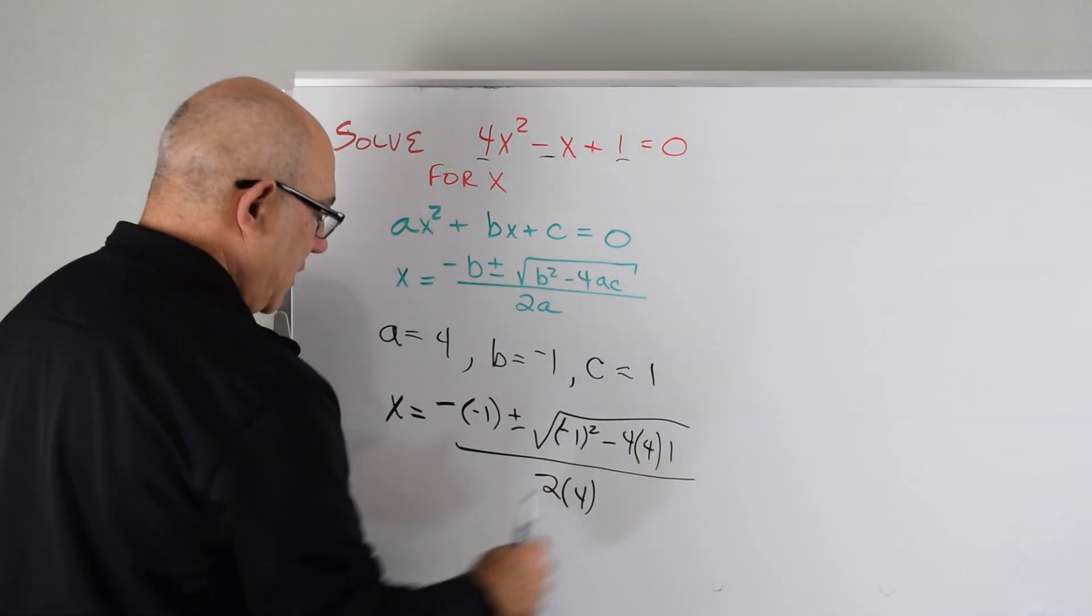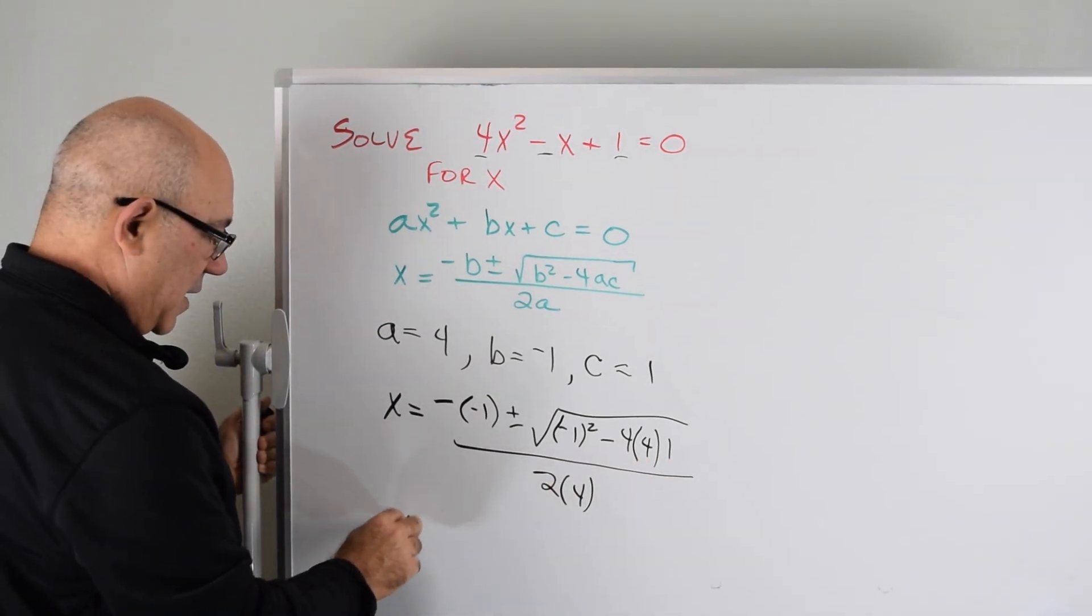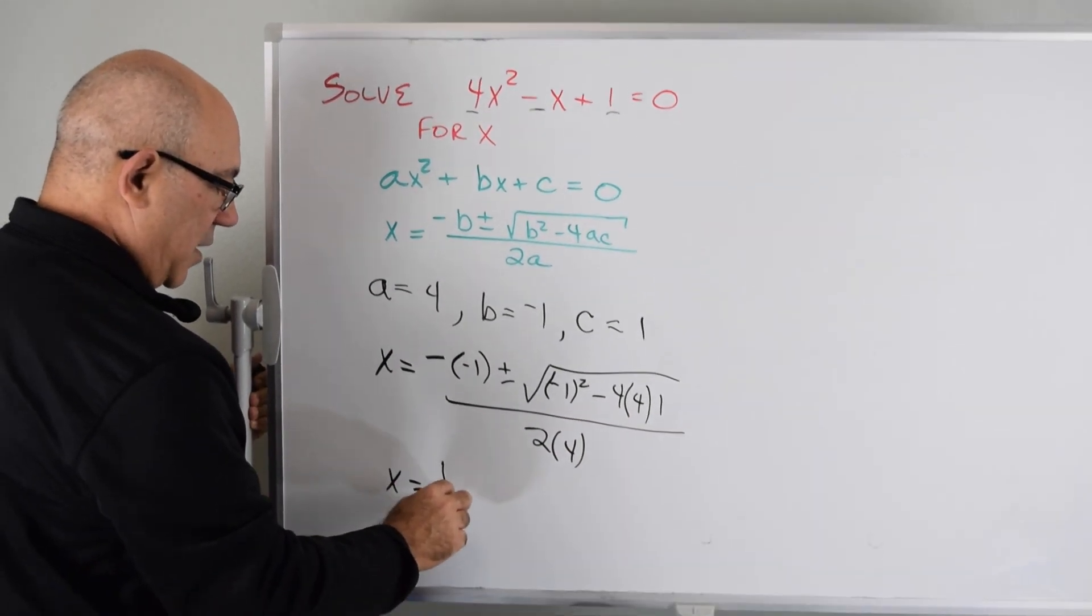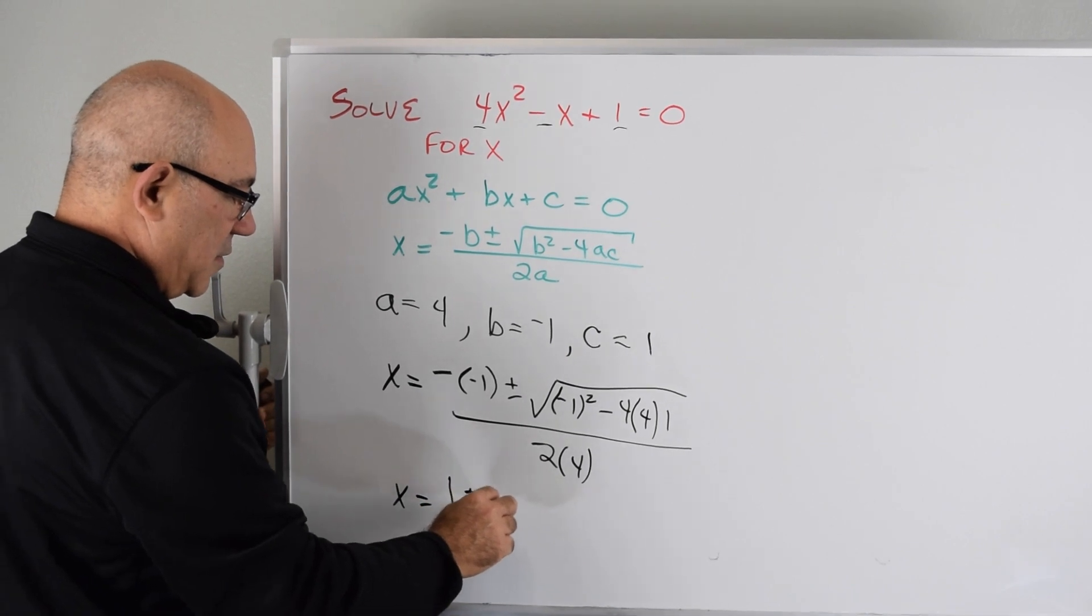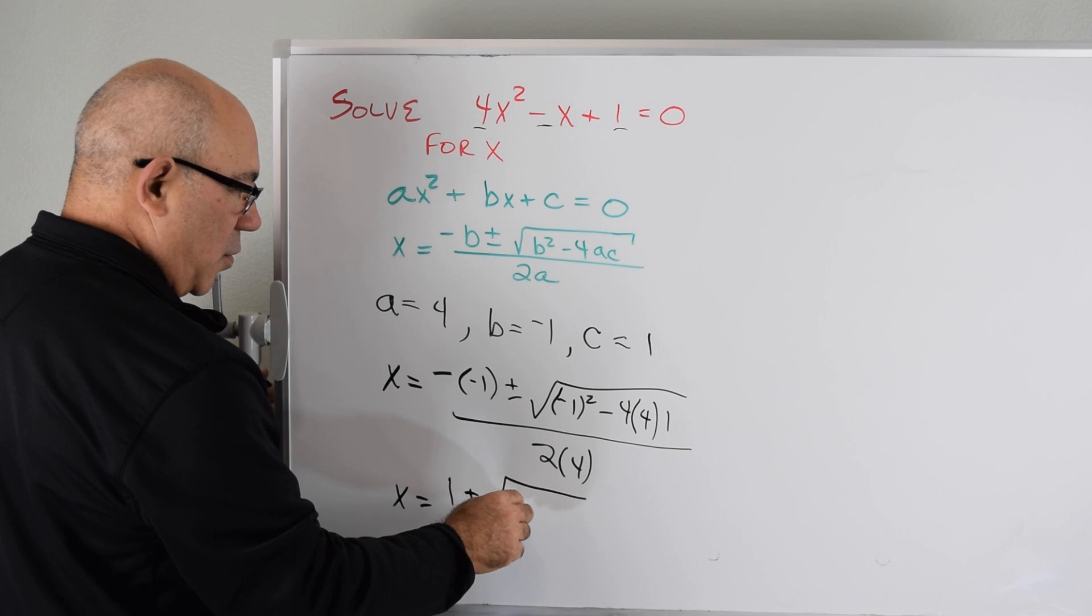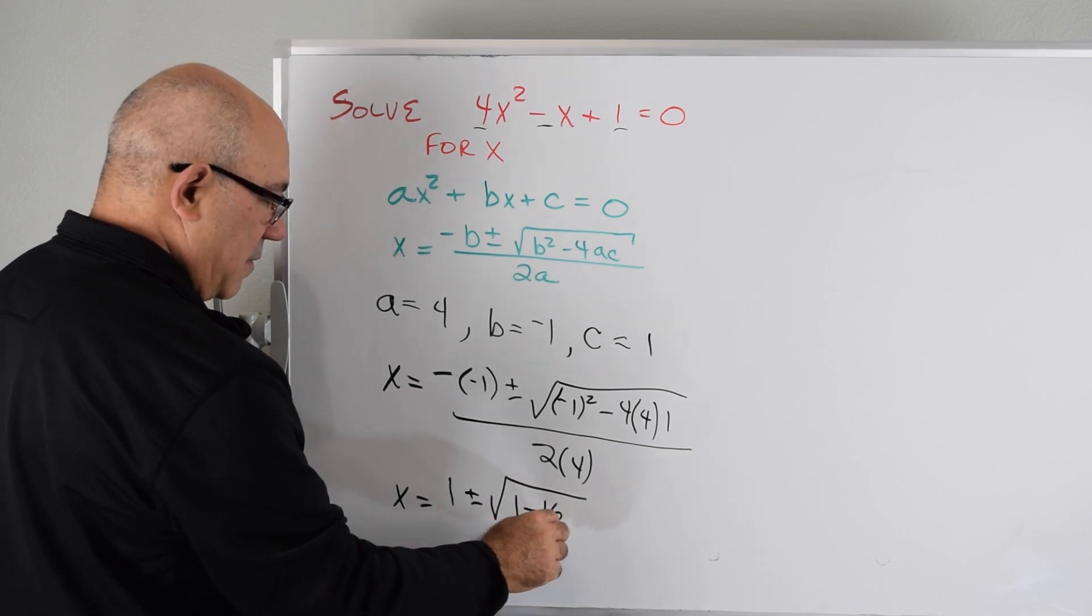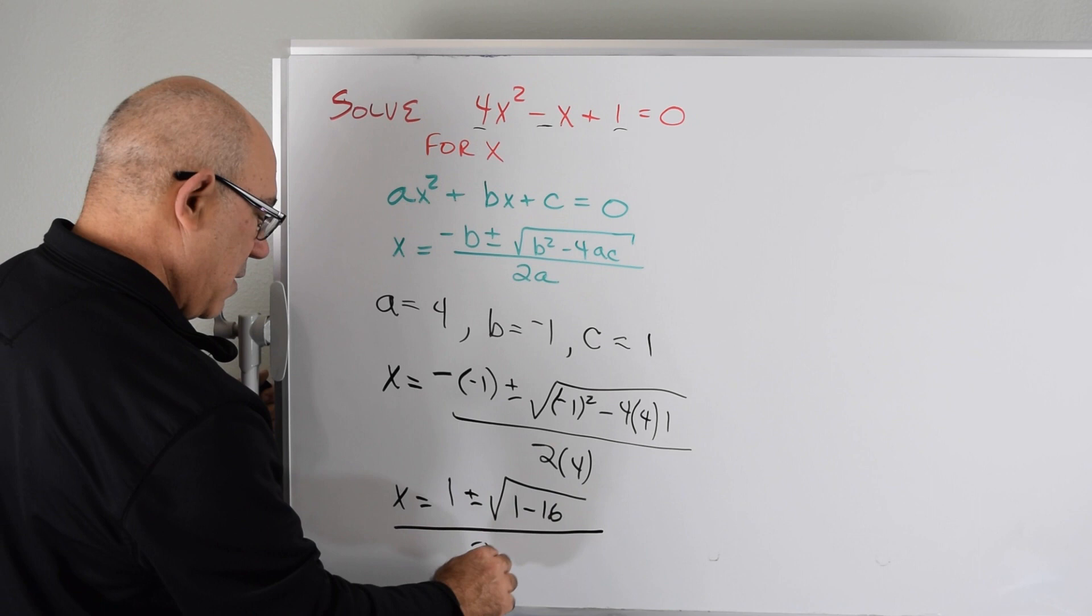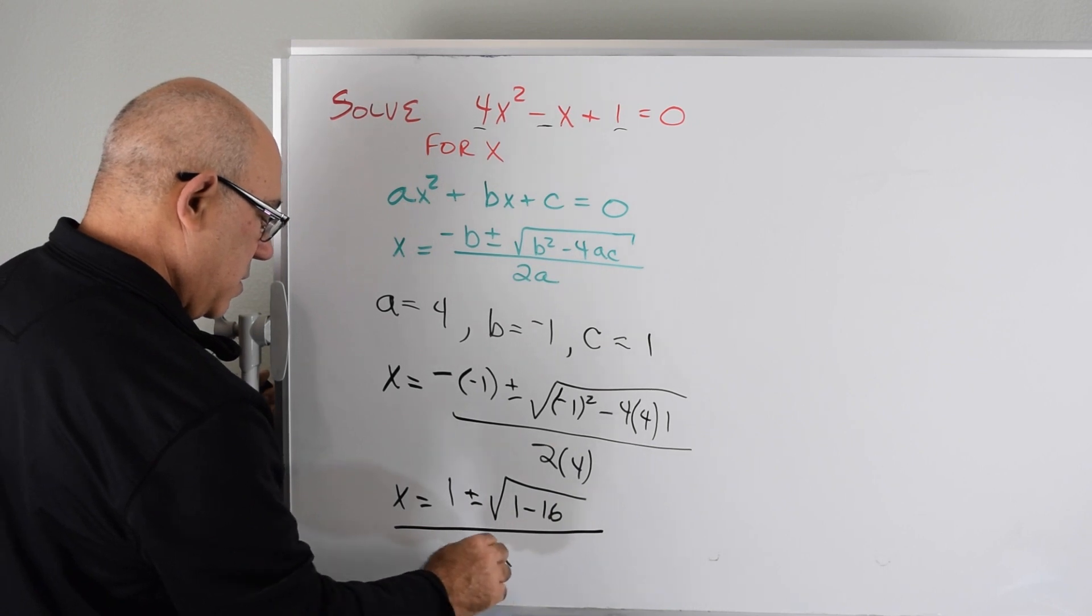Okay, now we just have to simplify this and we'll have our answer. x equals 1 plus or minus the square root of 1 minus 16, all over 2a.